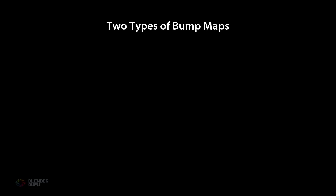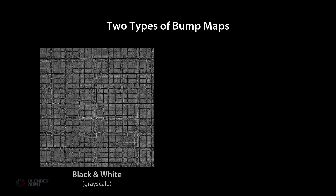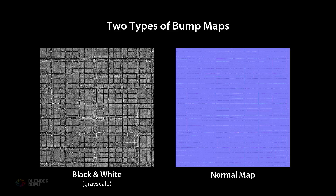There are two ways to create a bump map. One is to create a black and white image, and the other is to create a normal map. Both create good enough results, but the latter requires special software and more fiddling. I've already made a tutorial on normal maps which you can watch here, but for this video we're going to proceed with the black and white bump map.